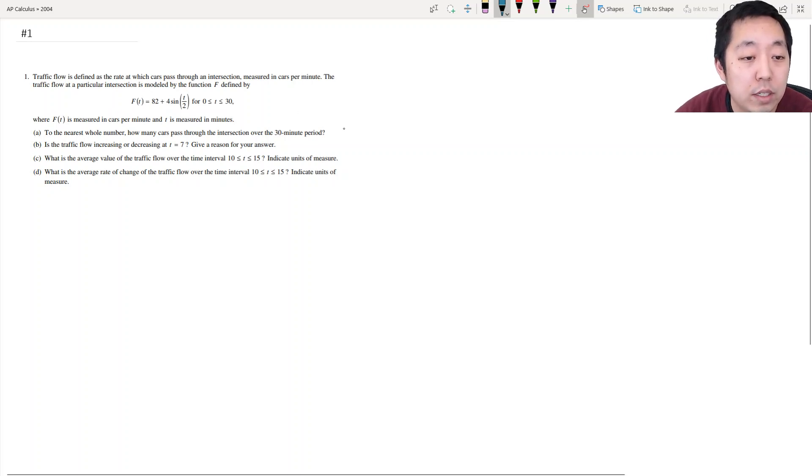Well, if this is the rate, then the total number of cars that pass through the intersection is the integral from 0 to 30 of f(t) dt.